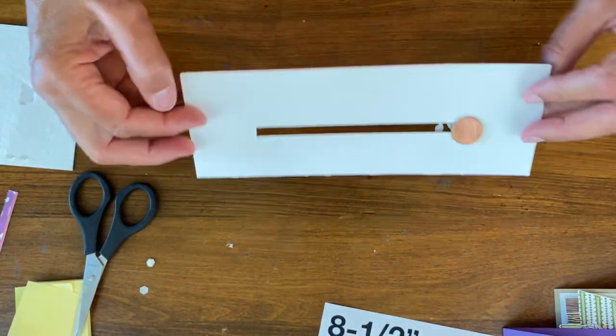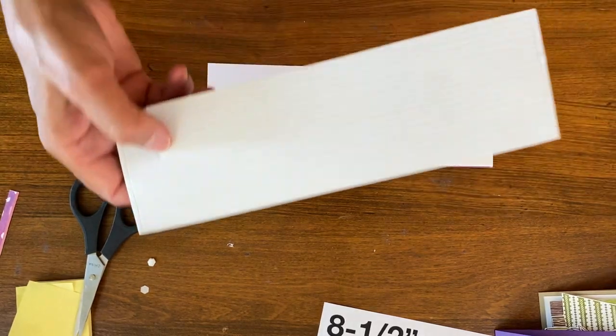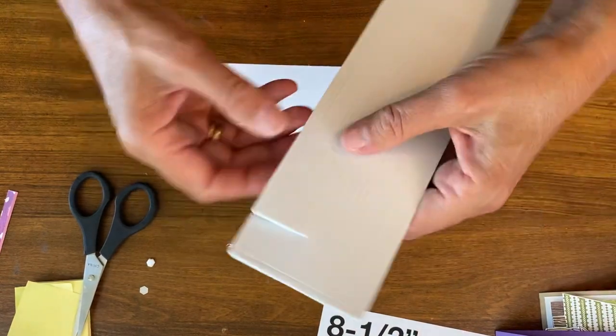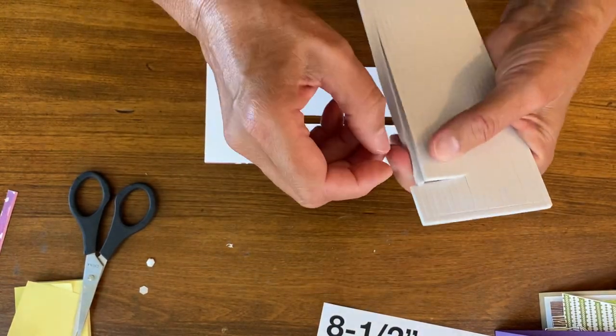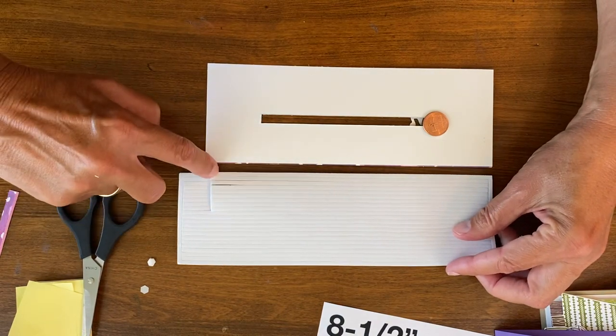Now to put it on the card, I'm going to use the foam adhesive strips and these are in the catalog. I'll put in the show notes what page they're on, but you can see I measured my card and then I just cut right here because this is how long I want them.